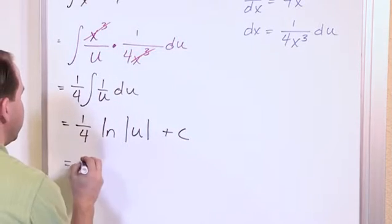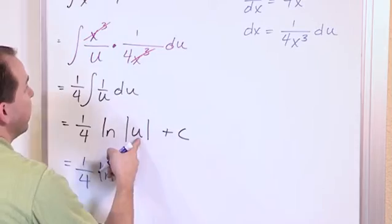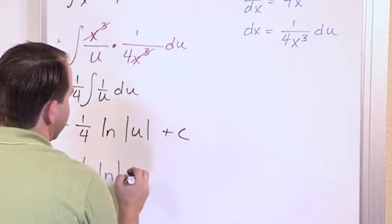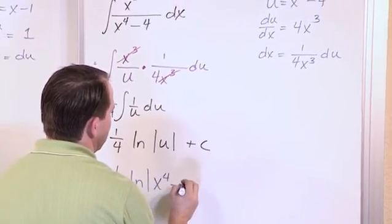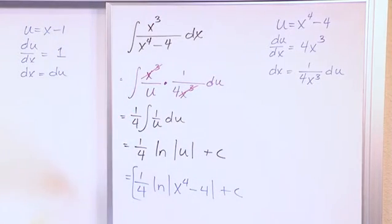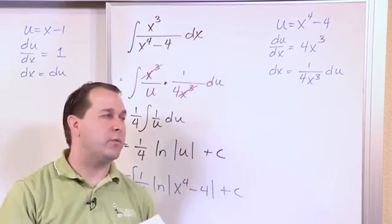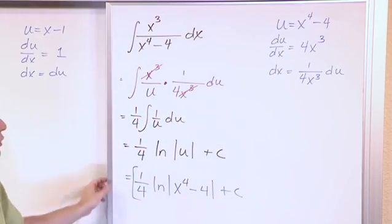So that's basically the answer, but we need to back substitute whatever we figured out, or what we substituted in the first place. u was x to the fourth minus 4 plus a constant. So the answer to this integral is one-fourth natural log absolute value of x to the fourth minus 4 plus a constant. So you're really doing the same techniques you've always been doing, but if you get down to a point where you have an integral of 1 over u, now you know how to do that.